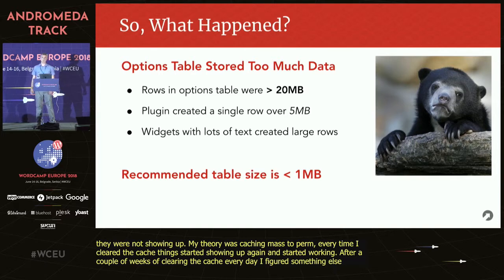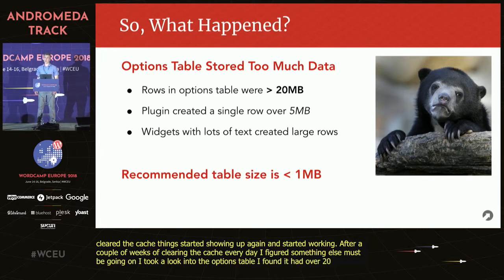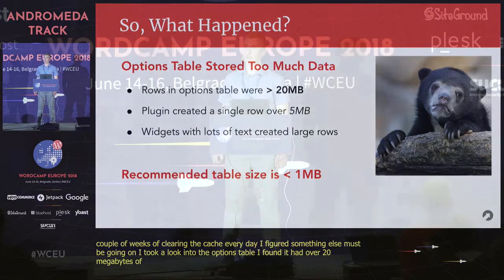When I took a look into the options table, I found it had over 20 megabytes of data, which is over 20 times larger than it should be. It turns out a popular WordPress plugin had synced with Google Search Console and pulled down tons of data and stored it in the options table.